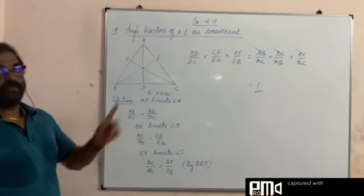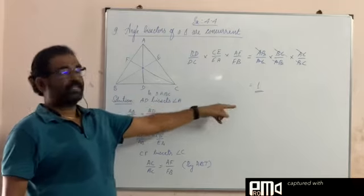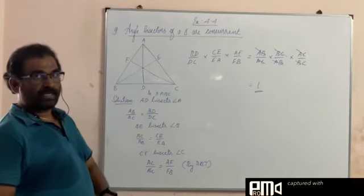So here Ceva's theorem is satisfied. This product of all these ratios is equal to 1 means the lines are concurrent.